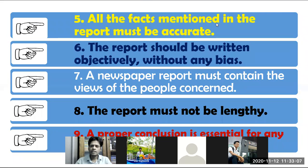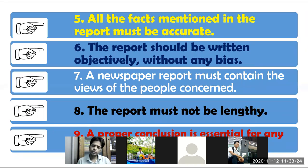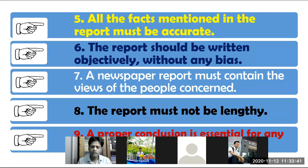All the facts mentioned in the report must be accurate. As a report writer, you should provide accurate information. The report should be written objectively without any bias — without any bias. This is the ethics of a journalist.